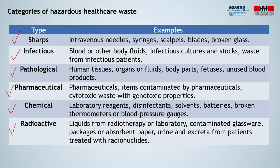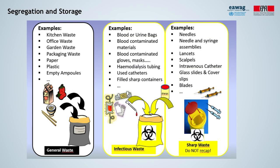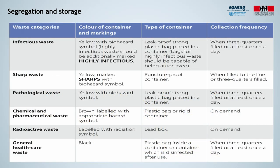Implementing a comprehensive segregation system involves knowing how to distinguish these various fractions and then setting up a system to store these separately. Here is one example of color coding on bins and containers for these different healthcare waste categories. You see the infectious and the sharps typically color coded with yellow, and the normal waste with black. This is also shown in a table by WHO, where recommendations for color coding and types of containers for the different categories are given.